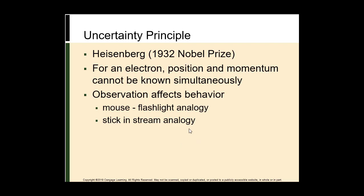Any attempt to determine accurately either the location or the energy will leave the other uncertain — this is now known as the Heisenberg uncertainty principle. If you choose to know the energy of an electron in an atom with only a small uncertainty, then you must accept a correspondingly large uncertainty in its position.